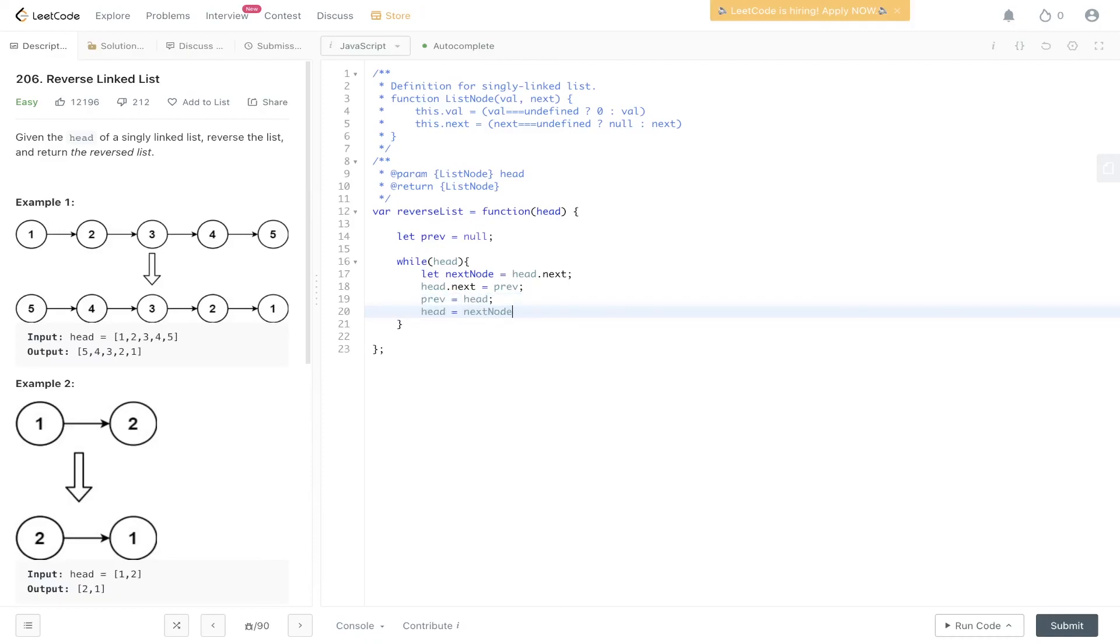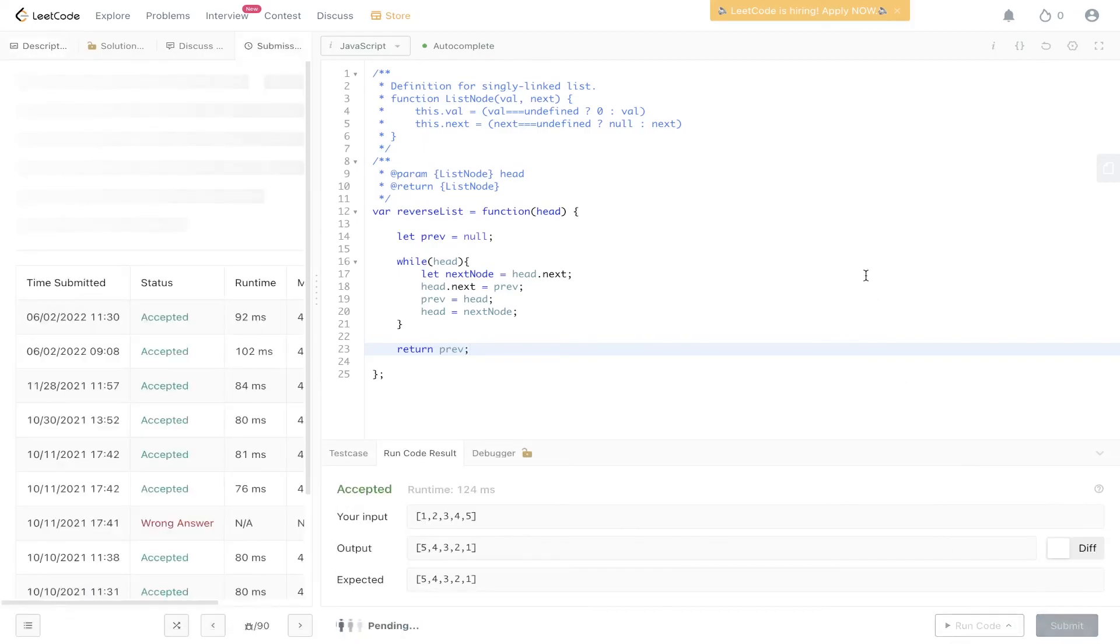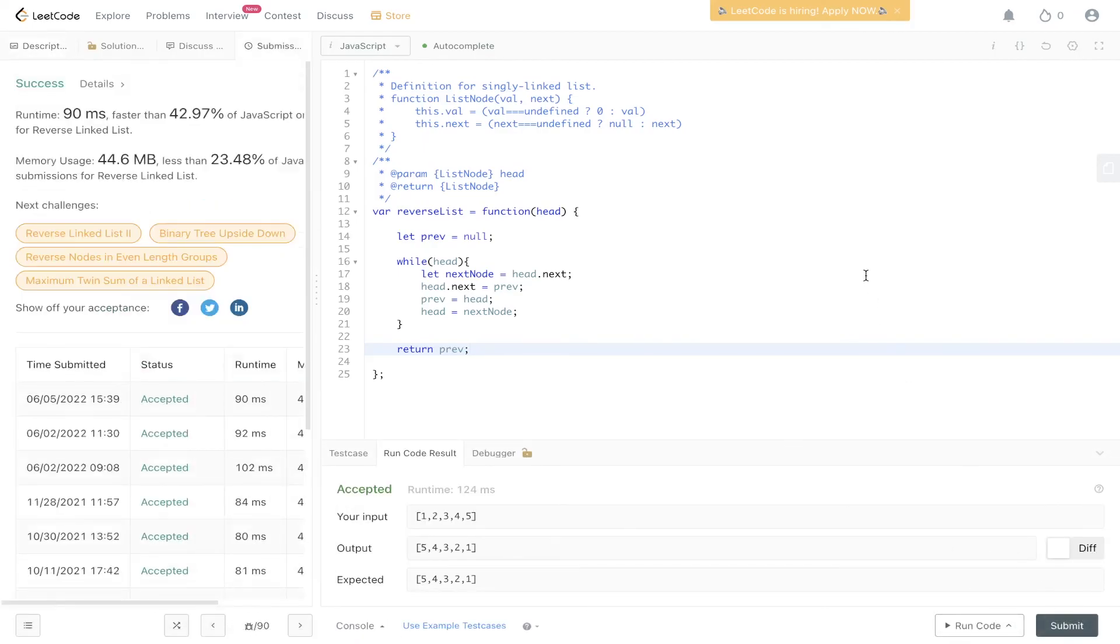So when head is equal to null we're going to hop out this while loop and then as we showed in the solution we need to return prev and that would be the linked list reversed. Let's give this a run. Let's submit it and there you have it.